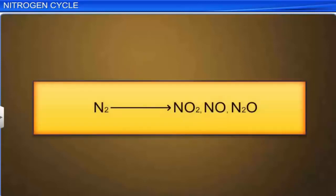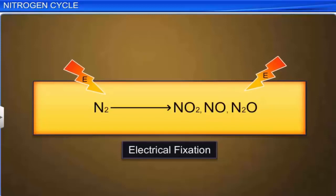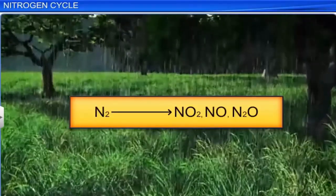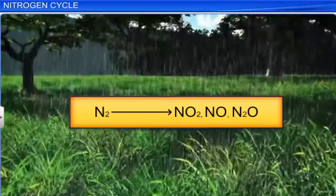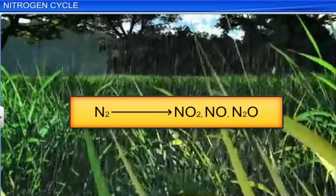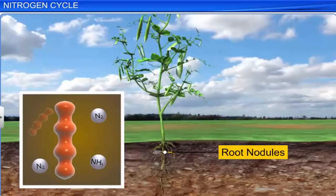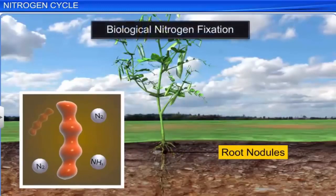In nature, elemental nitrogen is converted into oxides with the help of electrical nitrogen fixers such as lightning, thunder, and ultraviolet radiation. Some of these nitrogen oxides are brought to earth by precipitation as rainfall. But most of it is biochemically fixed by microorganisms. This is called biological nitrogen fixation.